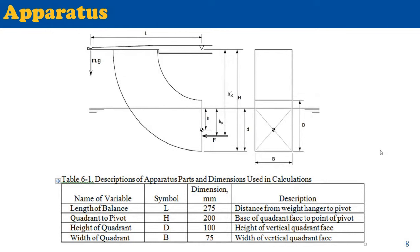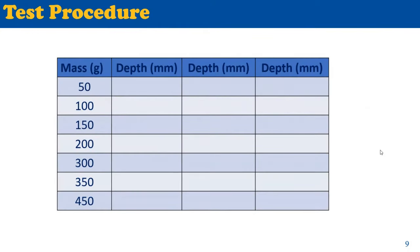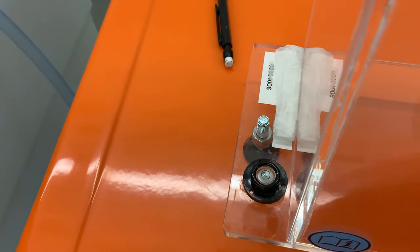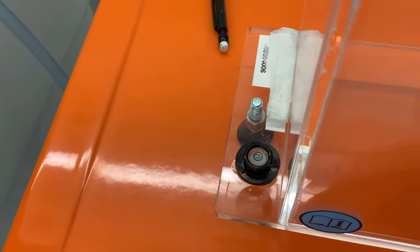The fixed apparatus dimensions will be given. For data collection, for each weight you add, collect at least three readings using eye-level observation — there can be small errors — and take the average. Now let's start by balancing the apparatus.